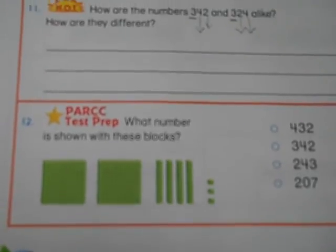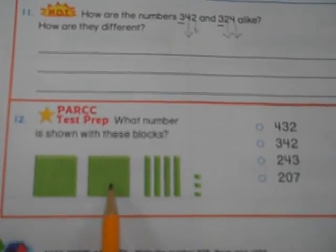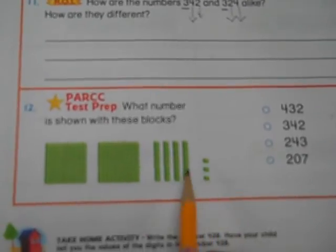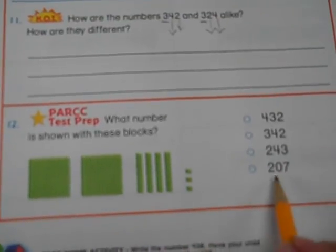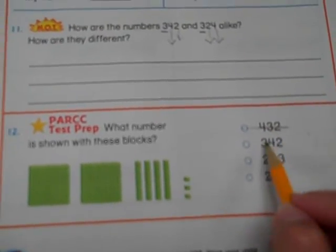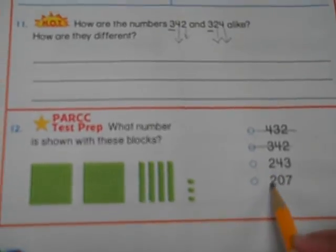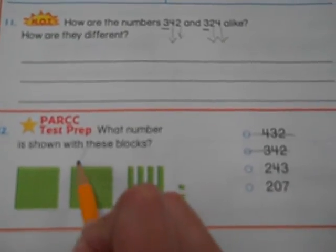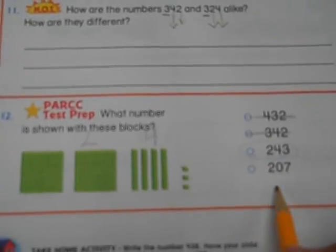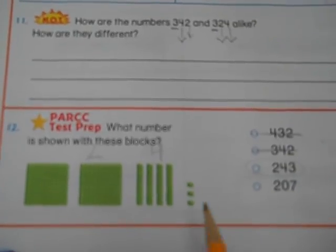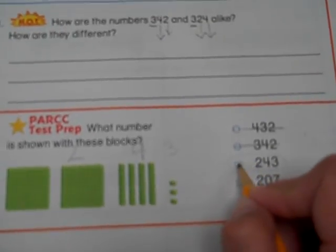Let's go to the last one, number 12. What number is shown with these blocks? Well, we know these are hundreds, these are tens, and these are ones. So let's count 100, 200. So we know it's going to start with a 2, so we can cross out the 4 and we can cross out the 3. Both of these have a 2 in the hundreds place, so they're still in the running. 10, 20, 30, 40. I have 4 tens. Let's see, which one has a 4 in the tens place? Oh, this one does. Let's just double check to make sure that's our right answer. Only 3 ones, 243.